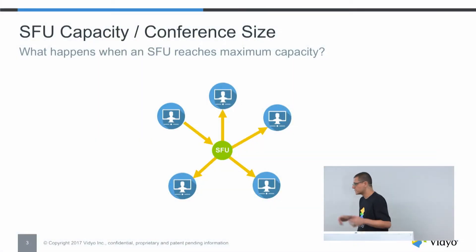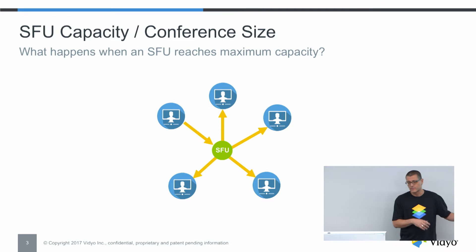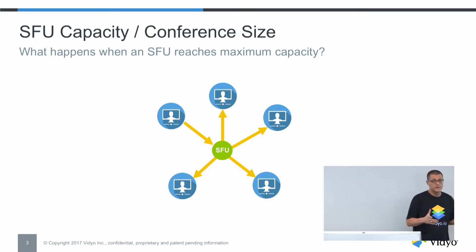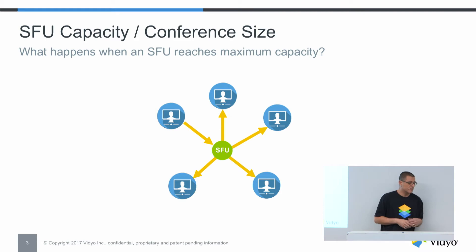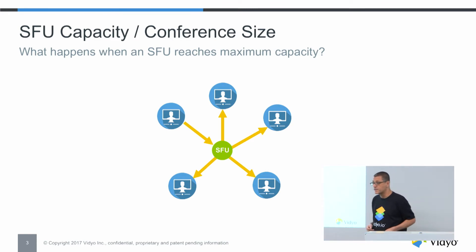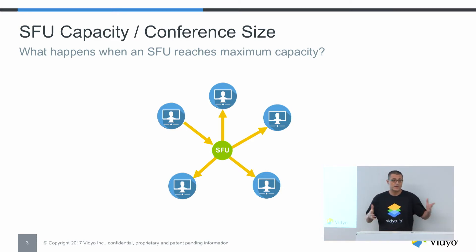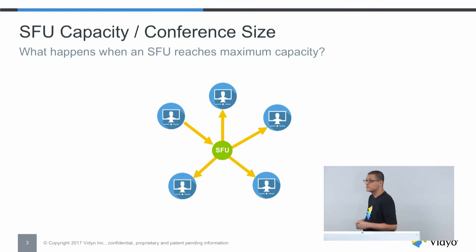SFUs are great, but they still have limitations. Sooner or later you're going to run into the capacity limits of the machine running your SFU — it could be CPU, but more likely when doing video, it will be bandwidth. Consider a high-quality video stream: 720p resolution, 30 frames per second — that's going to take 2 megabits per second. In a multi-point video conference you're probably receiving more than you're sending, so think 3 to 4 megabits per second. On a typical gigabit ethernet link, that's 100 to 150 participants max. That's a pretty large conference, but you do want to support larger conferences if the need arises, and with one SFU you're going to hit your limit.